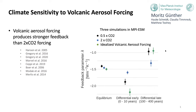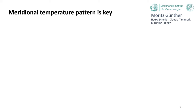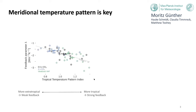For the 2×CO2 simulations, we find the familiar pattern effect with slightly stronger feedback in the first decade, which weakens on the centennial timescale. For the cooling simulations, the pattern effect is very much enhanced: even stronger feedback early on and even weaker feedback later. The meridional temperature pattern is key for this effect. We measure this by a tropical temperature pattern index that is larger than one when warming or cooling is concentrated in the tropics, and lower than one when concentrated in the extra-tropics. This index correlates really well with the feedback parameter.